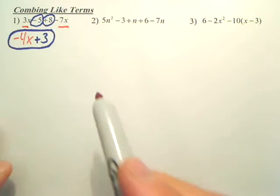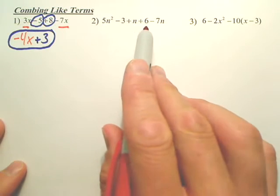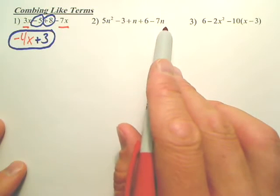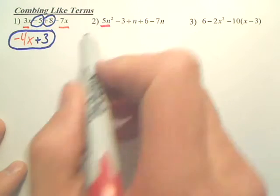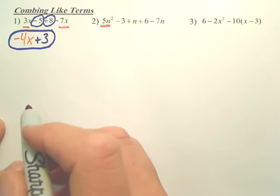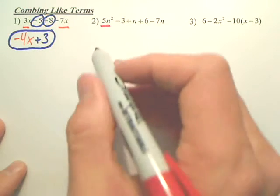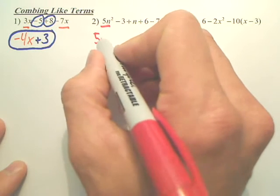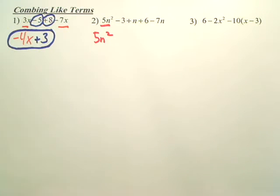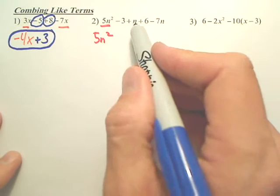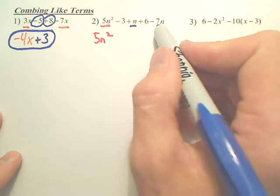Next, look at all of these and look for the term with the highest power. Does anything else have something with that power to combine with? That's all by itself, so we just rewrite it. Nothing to combine with. Now, look for the next highest term. We have N's. We have two of them.